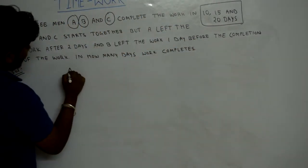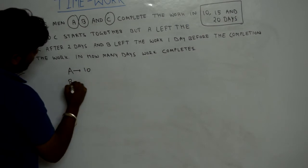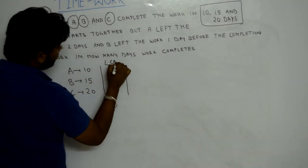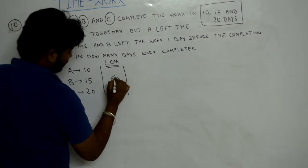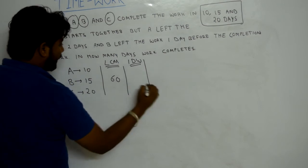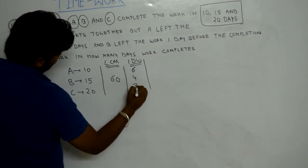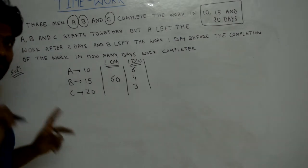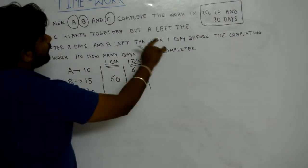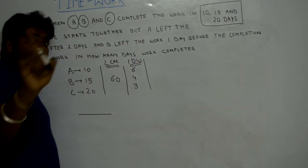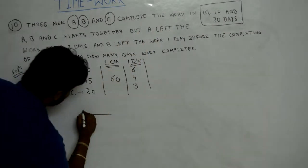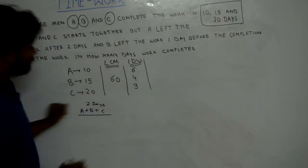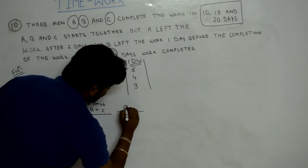We write the information given: A completes work in 10 days, B in 15 days, C in 20 days. LCM of these numbers is 60. One-day work: A is 6 units, B is 4 units, C is 3 units. A, B and C start together and work for 2 days; after that A left, so B and C continued.